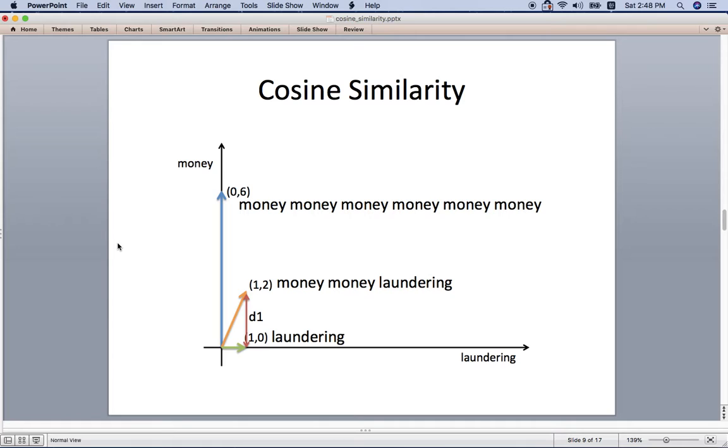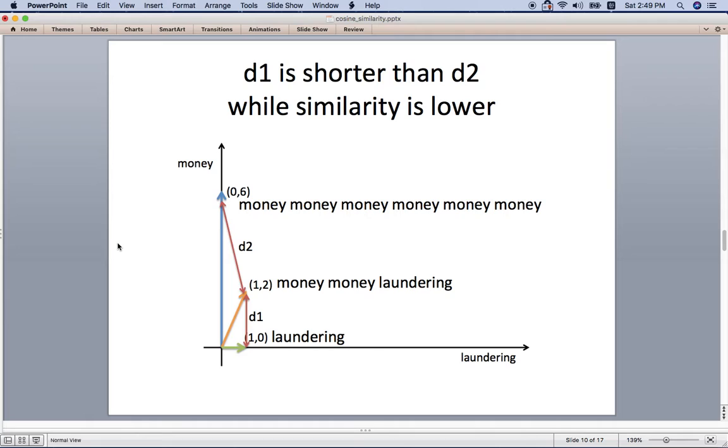If you use the Euclidean distance, the laundering and money money laundering distance is closer than the money money laundering and the six monies here. But if we want to talk about similarity, actually the similarity between the six monies and money money laundering is higher than money money laundering and laundering.